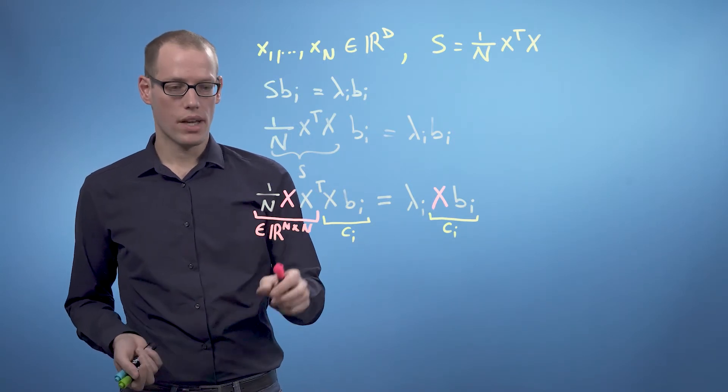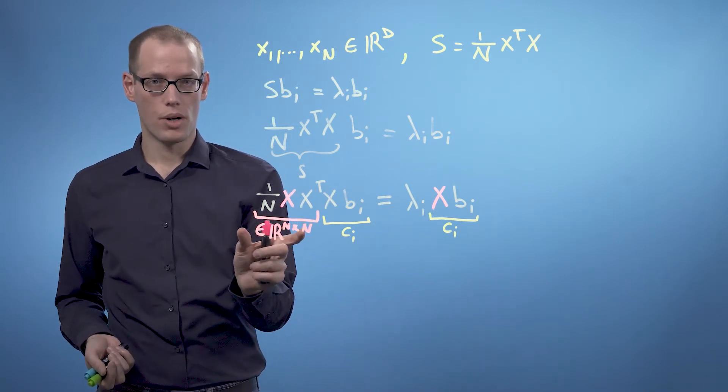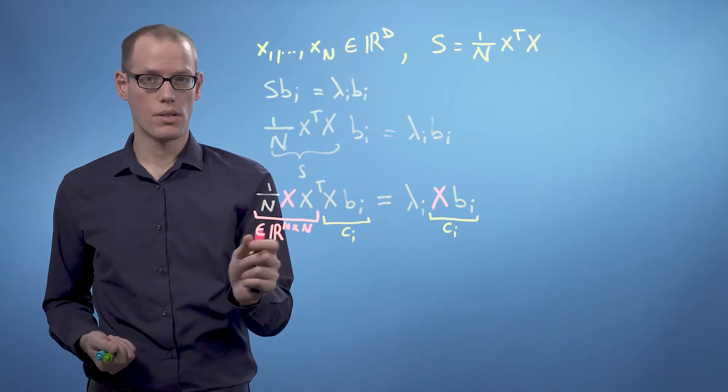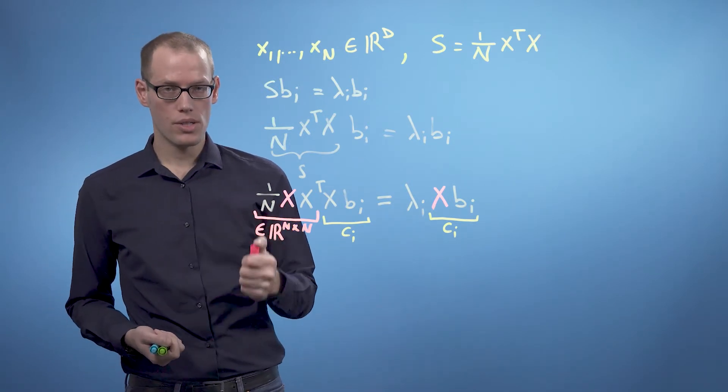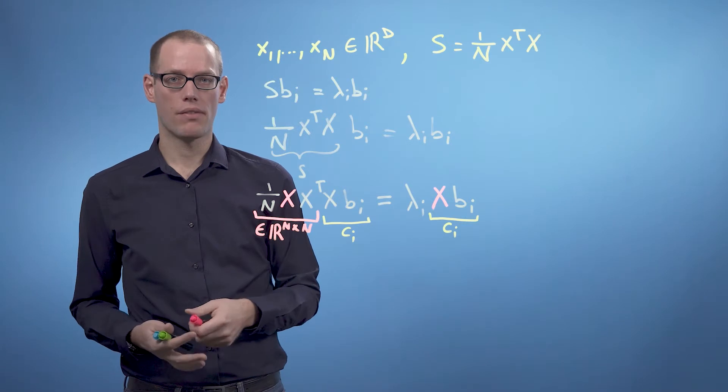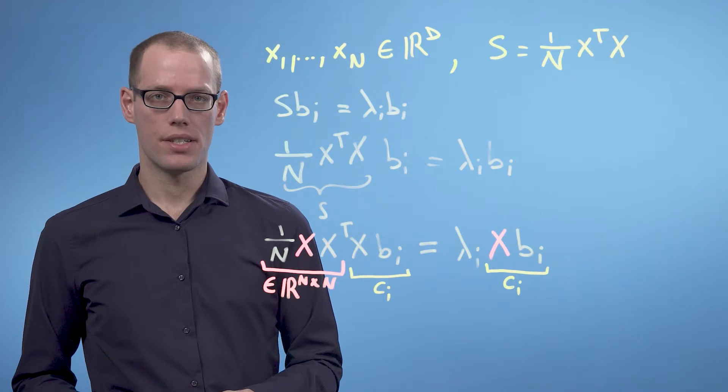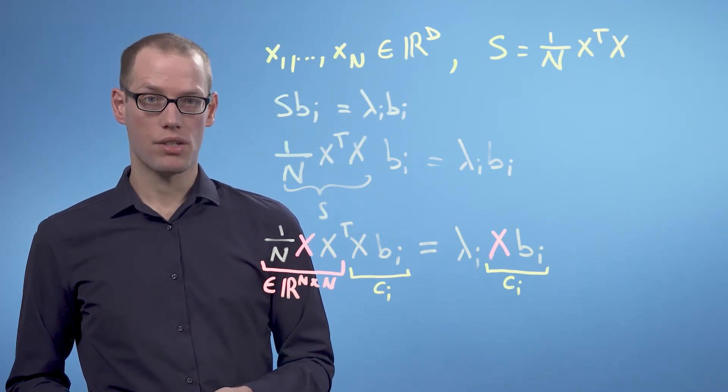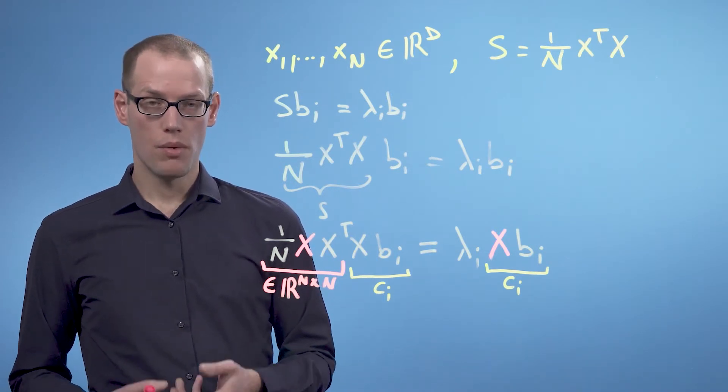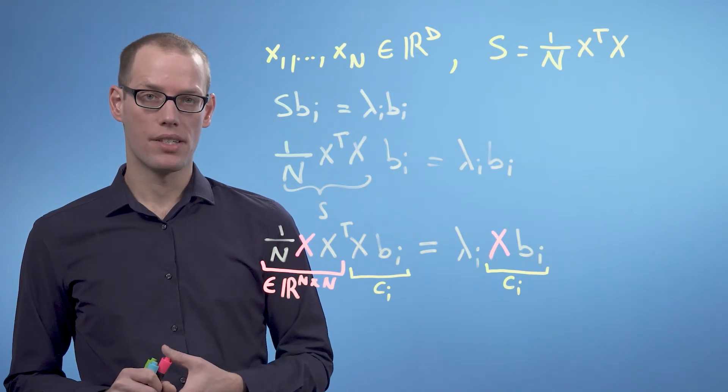So now we can compute the eigenvectors of this matrix 1/N X X^T. And we use this to recover the original eigenvectors, which we still need to do PCA. Currently we know the eigenvectors of 1/N X X^T, and we want to recover the eigenvectors of S.